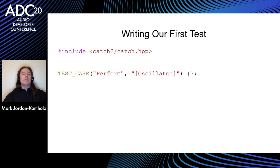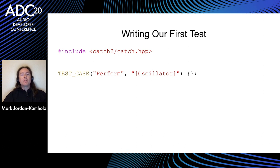Let's write our first test in a separate CPP file called oscillator_tests. We include the Catch single header, and we make a macro called TEST_CASE, passing it a few arguments, then an empty set of brackets. TEST_CASE basically behaves like a function. The first argument, 'perform', is the name of the test. The second holds a list of strings — those are the tags. I've given it a tag of 'oscillator.' Inside the test, we make an oscillator and use another macro, REQUIRE_THAT, which says we require that the output of the oscillator's perform function is within some relative value close to zero.